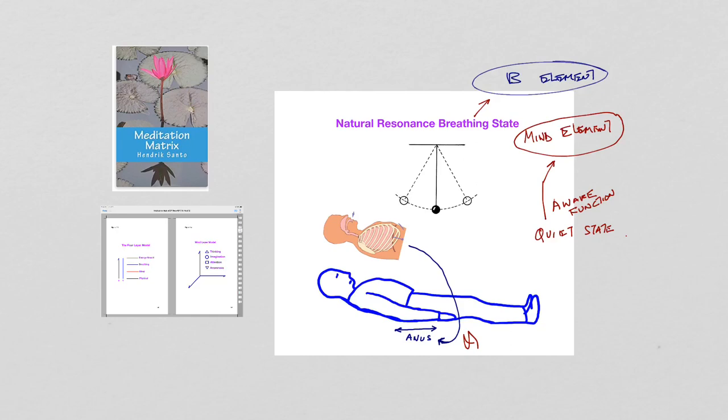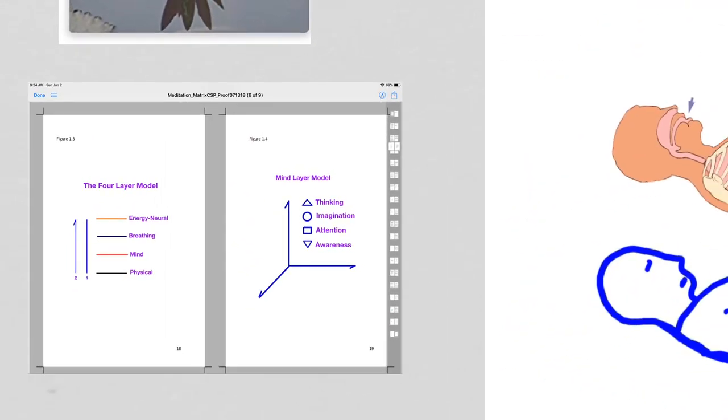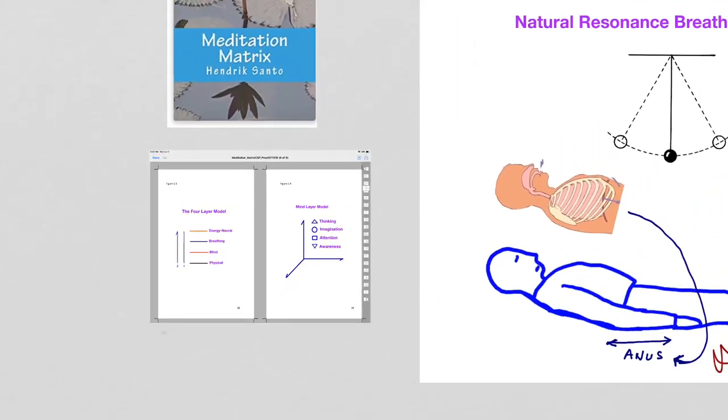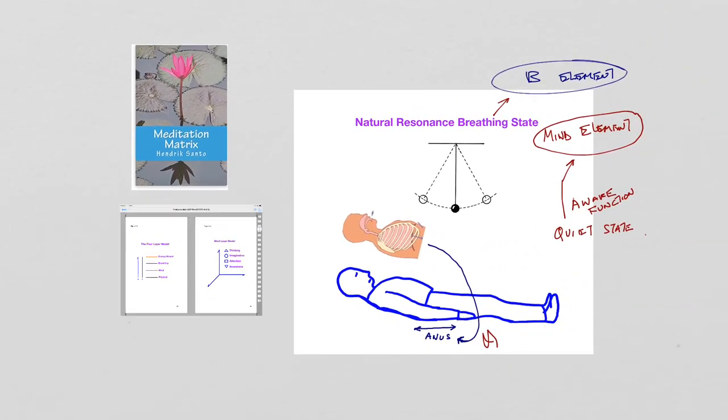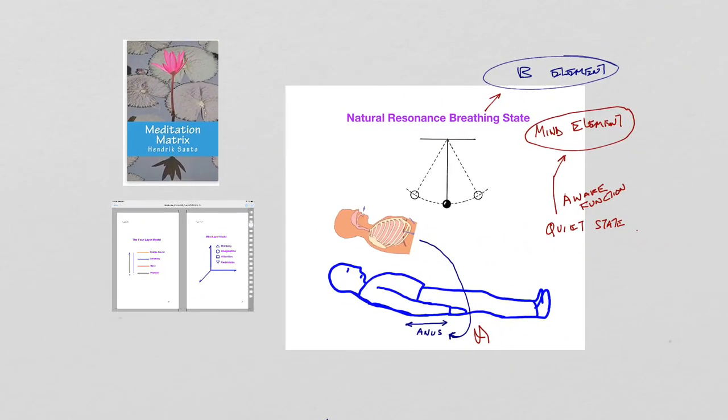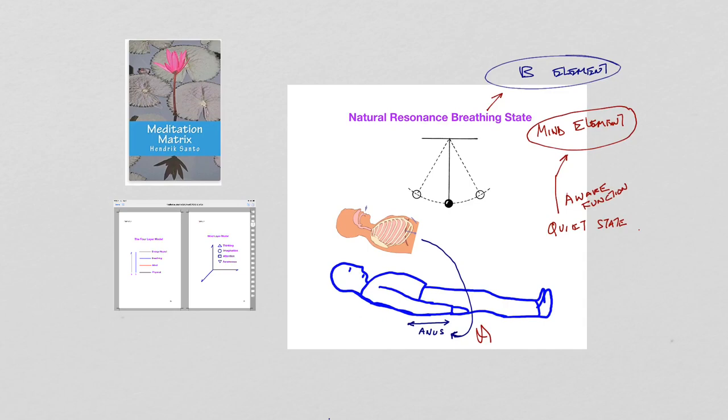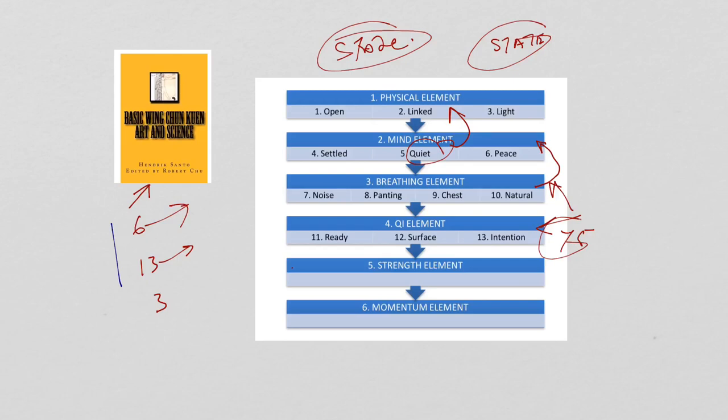Now, like in the meditation matrix books, the awareness functions, and in the Wing Chun basic Wing Chun Art and Science, there is that state too. And also, you can see here now, it needs to use the quiet state of the mind.